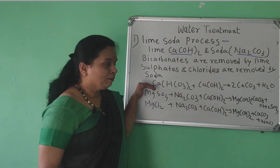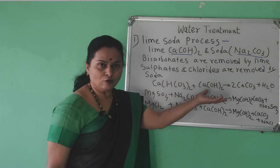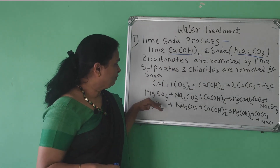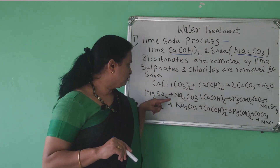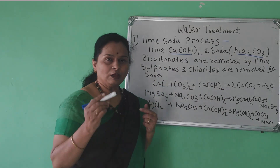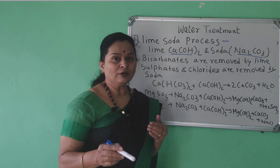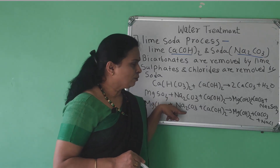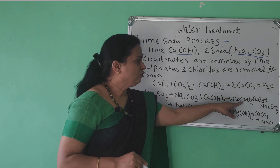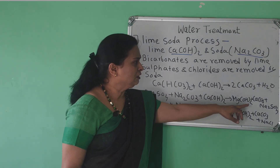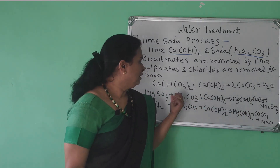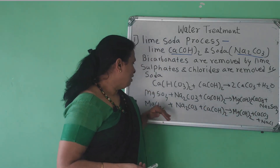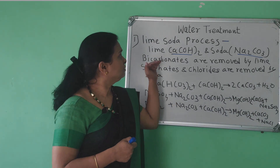Similarly, when lime is added to magnesium bicarbonate, insoluble magnesium carbonate is formed, which can also be removed by filtration. For sulfates and chlorides — which represent permanent hardness — both lime and soda are used. Temporary hardness is removed by lime alone, while permanent hardness requires both lime and soda. The products include magnesium hydroxide, calcium carbonate, and in the case of sulfate hardness, sodium sulfate is formed; for chloride hardness, NaCl is formed.